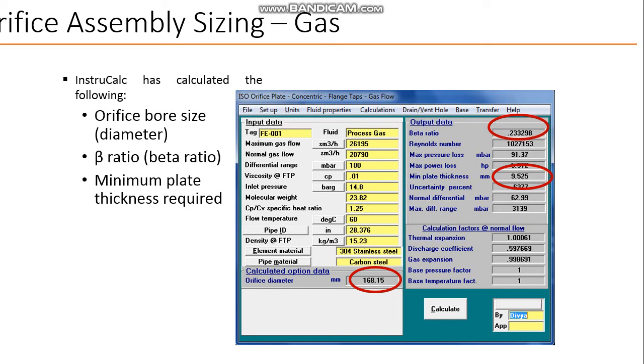Pipe ID in inches 28.376, density 15.23, element material 304 stainless steel, and pipe material carbon steel.